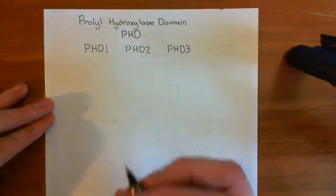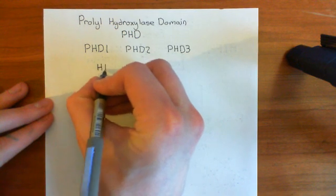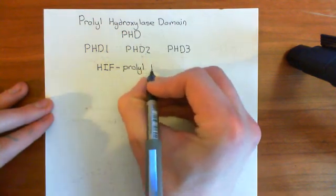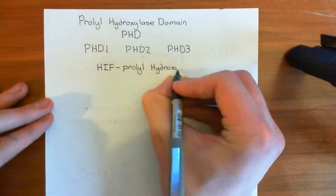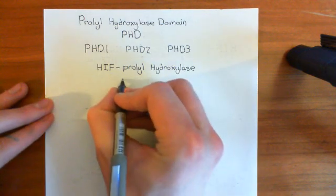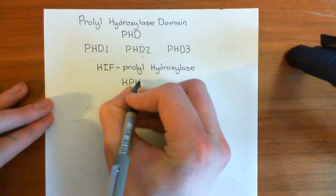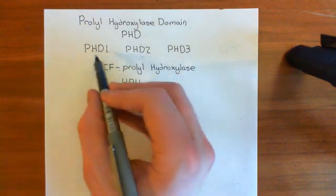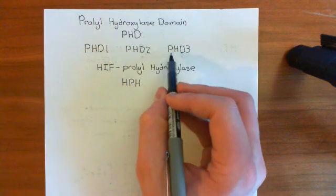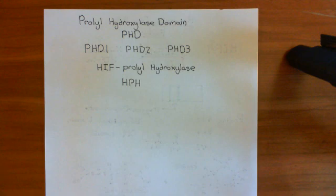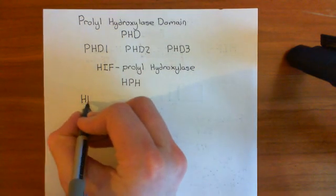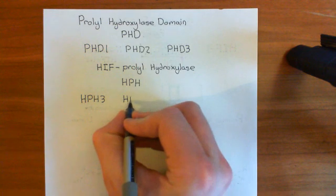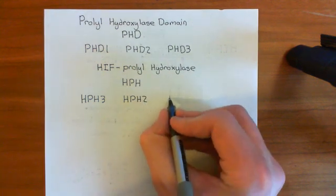There are other naming systems as well. Another is the HIF prolyl hydroxylase system, abbreviated to HPH enzymes. What would be simple is if PHD1 were called HPH1, PHD2 called HPH2, and PHD3 called HPH3 — but unfortunately it is not that simple. PHD1 is called HPH3, PHD2 is called HPH2, and PHD3 is called HPH1. So the numbers swap around.